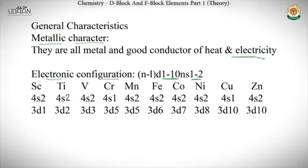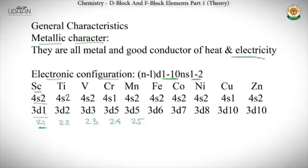For example, Sc has atomic number 21, Ti has atomic number 22, and V is 23, so we can calculate their configurations from their atomic numbers. There is a short trick: the number of electrons in the d orbital equals the ones digit of the atomic number. For Ti the ones digit is 2, giving d², and for V it is 3, giving d³.